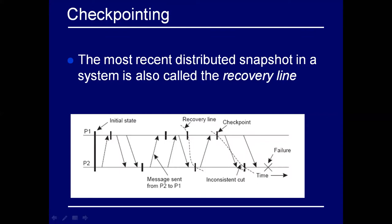Based on whether you are getting orphan messages, you have to go back to your last recovery line. You don't want to go all the way back to the initial point — the lower you roll back, the less computation you lose. The most recent distributed snapshot in the system is called the recovery line. Any checkpointing protocol will find the last recovery line and processes will roll back to that recovery point and resume computation from there.